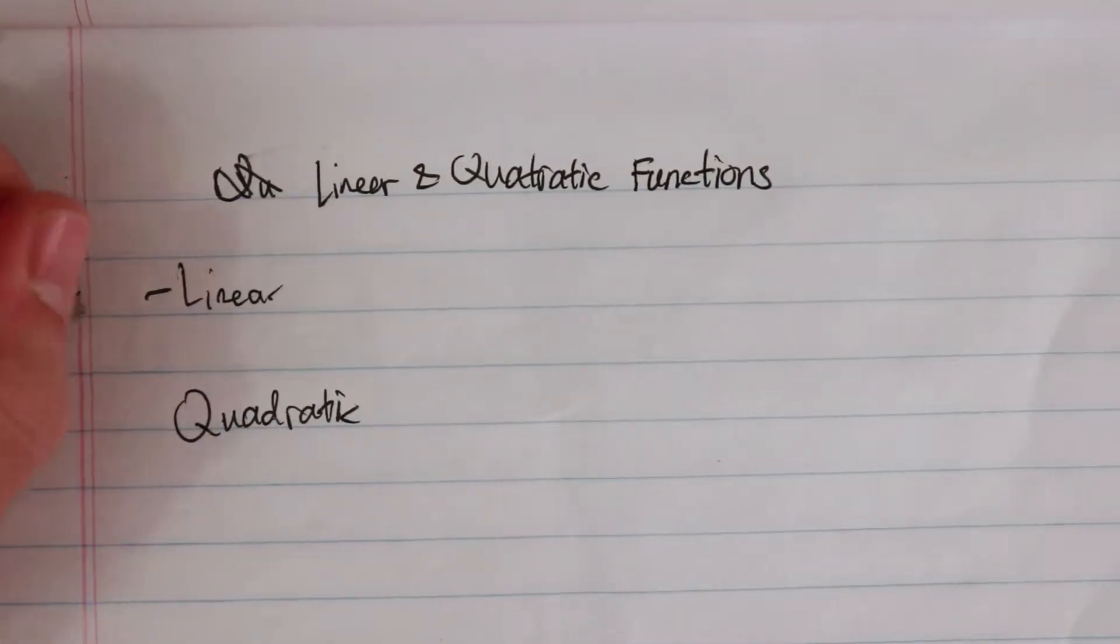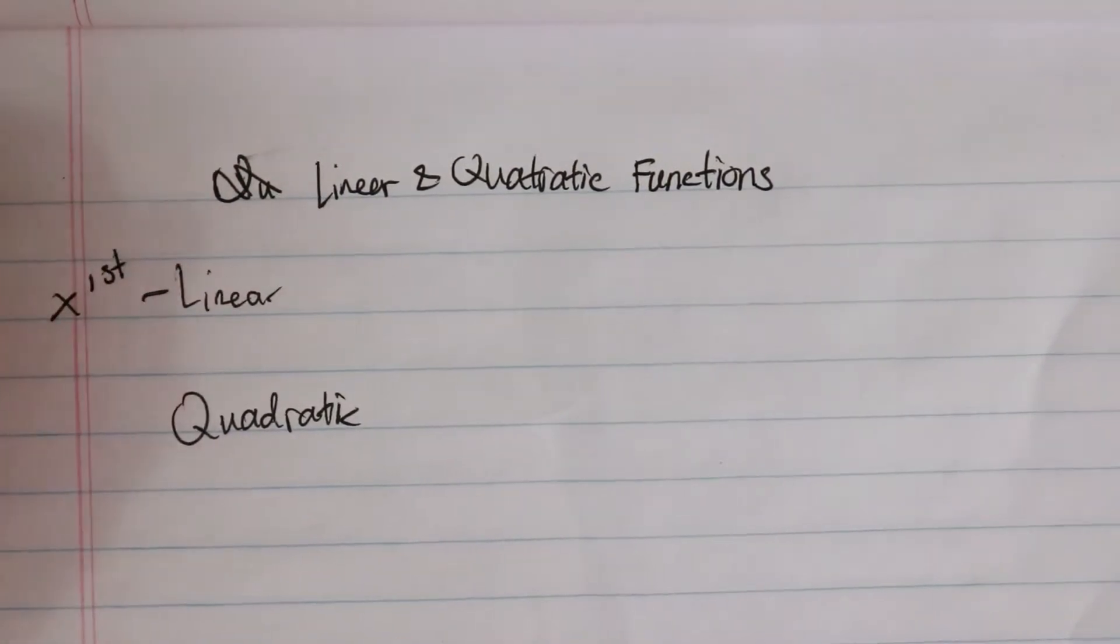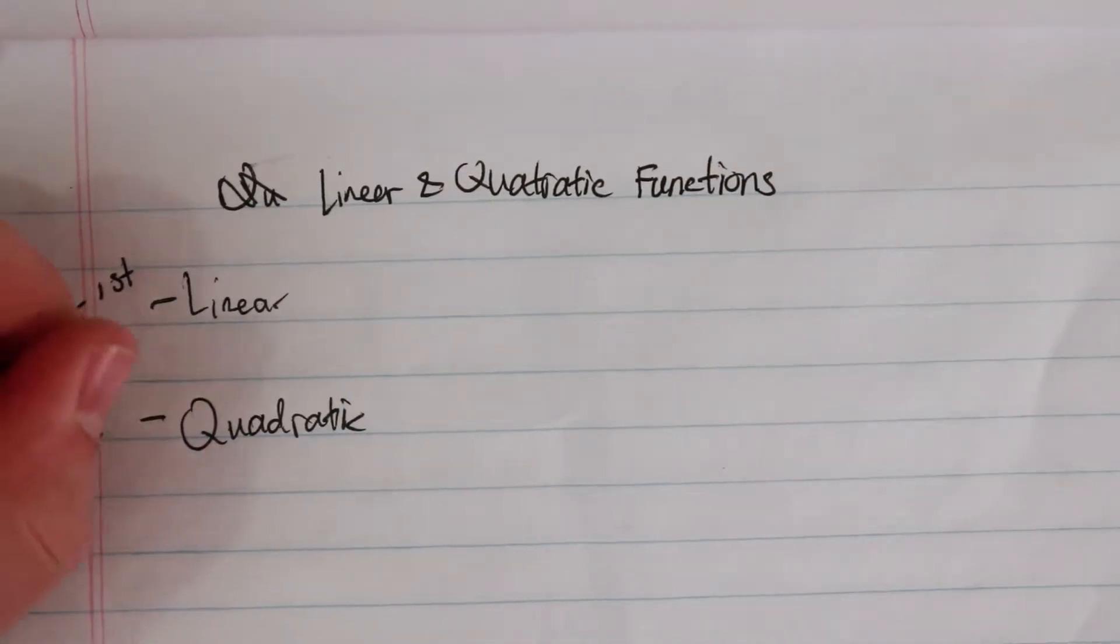So linear - this means x to the first power, usually. And a quadratic means x to the second power.